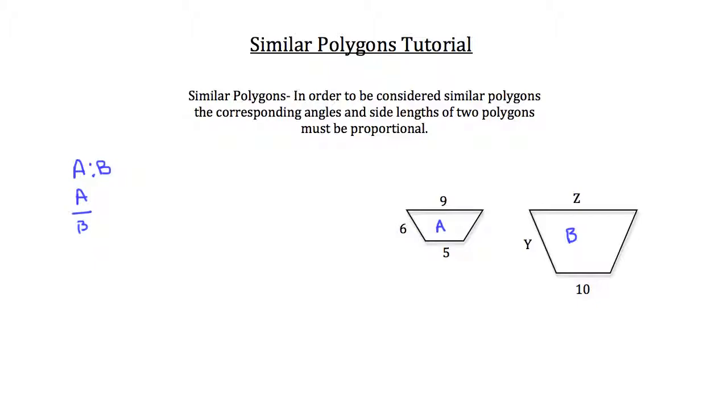Now, for them to be similar, they have to have proportional side lengths. So, let's take a look at two side lengths that we do know. The bottom, smaller base of both trapezoids.